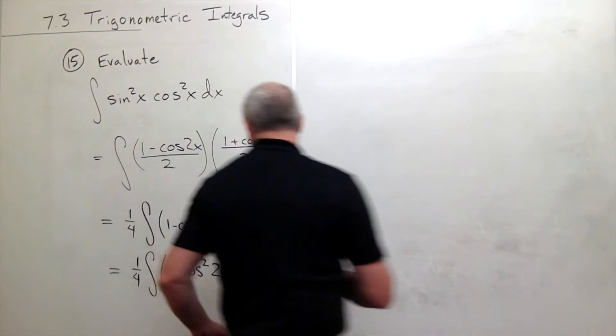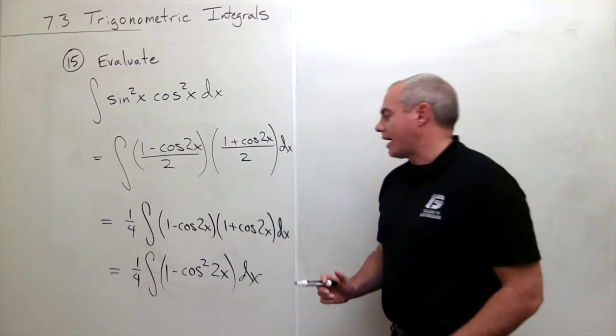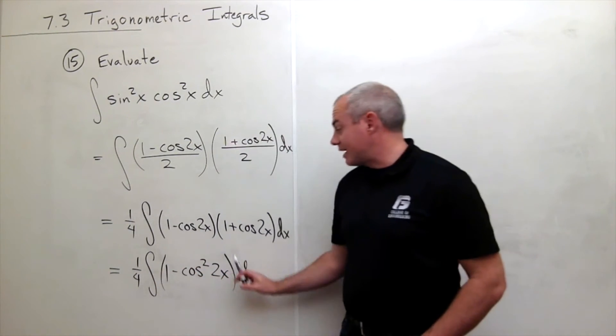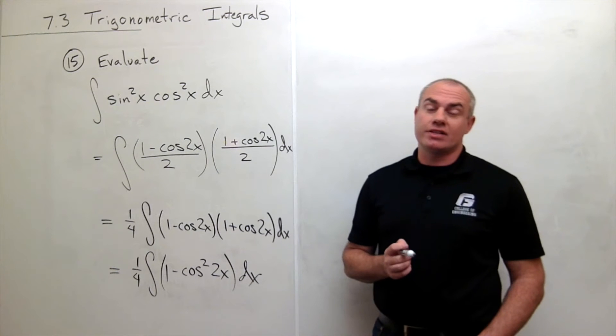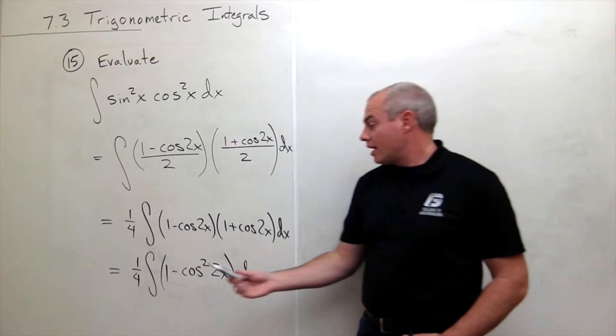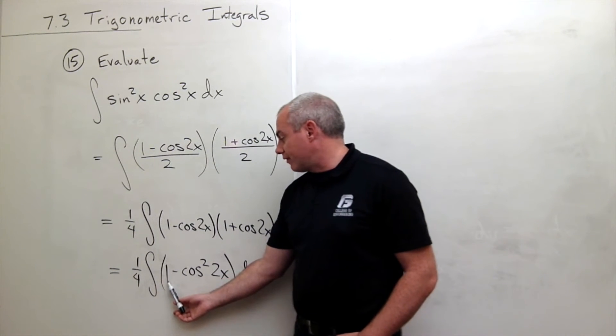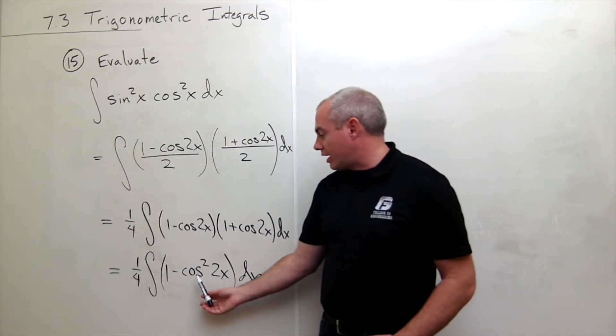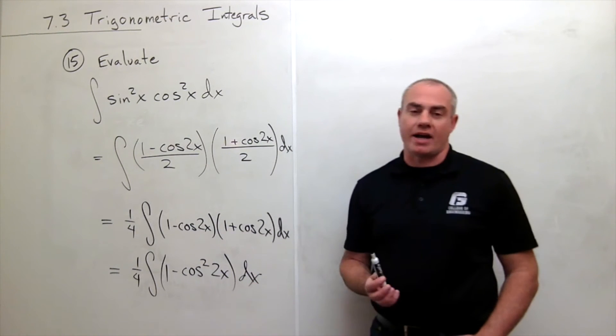Now that I have it in this form, I can ask the question, now can I take the antiderivative? And the answer is, well, not quite. I know how to take the antiderivative of 1 but we don't know how to take the antiderivative of cosine squared of 2x.